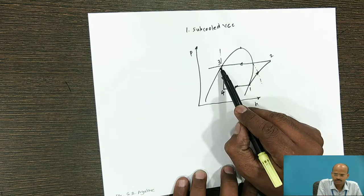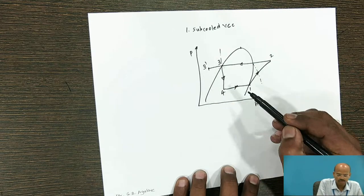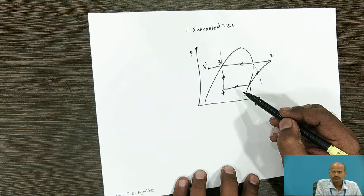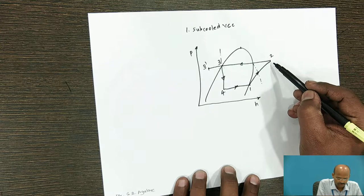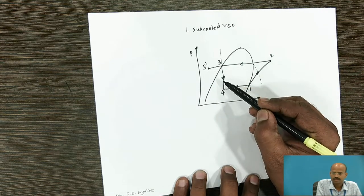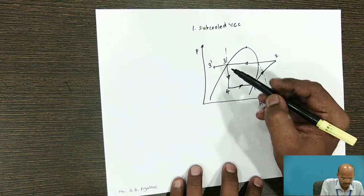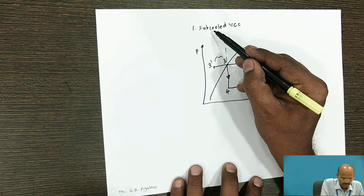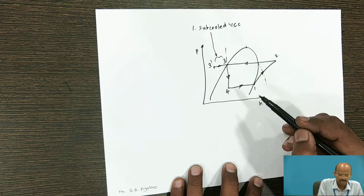So 3 to 3 bar will be subcooling process and the total condensation process will happen from point number 2 to point number 3 dash. This is known as subcooled 3 to 3 dash.